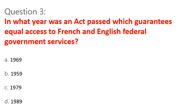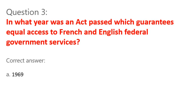Question 3. In what year was an act passed which guarantees equal access to French and English federal government services? A. 1969. B. 1959. C. 1979. D. 1989. Correct answer: A. 1969.